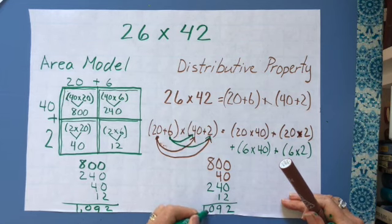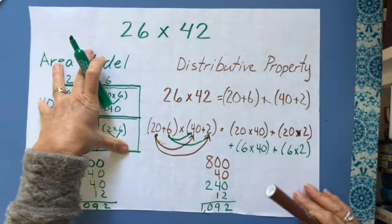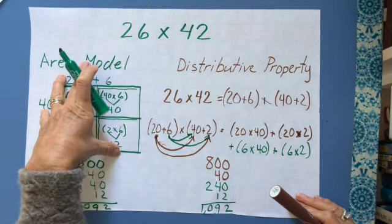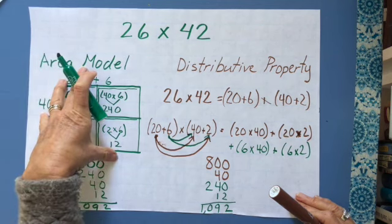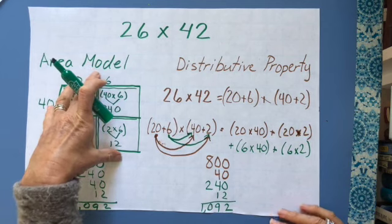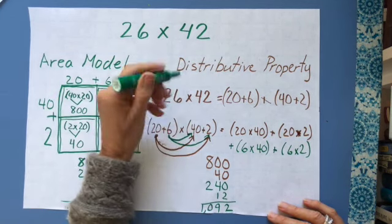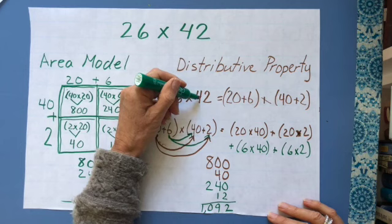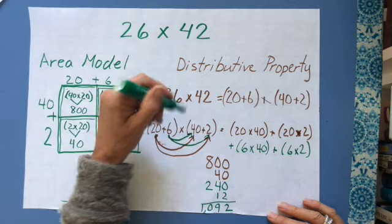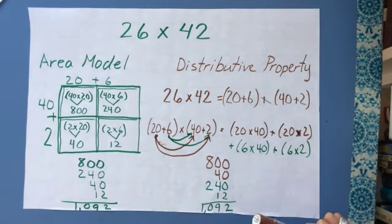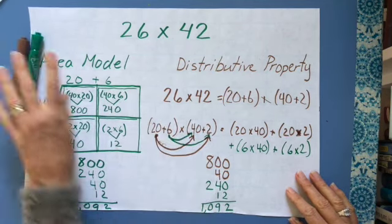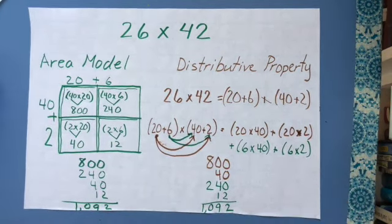The difference between the area model and the distributive property is the area model uses boxes. People tend to like the boxes because it keeps them more organized. With the distributive method, they might forget that a digit like 4 is really 40, and mess it up. Some people like the area model better; some people like the simplicity of the distributive property. I hope that helps you.